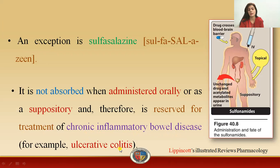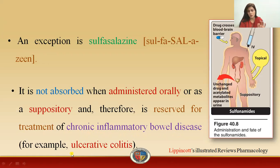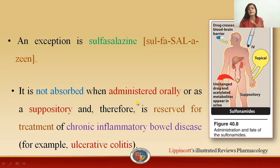For example, ulcerative colitis. Chronic inflammatory bowel disease itself contains different subclasses, and among them the mentioned one is ulcerative colitis. Sulfasalazine is a drug that cannot be absorbed well — it is not absorbed when given orally or as a suppository.